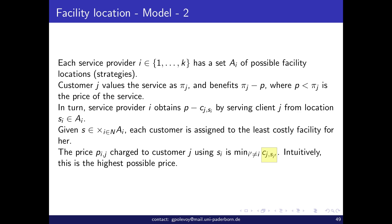The question is: how much would the least price from another service provider i' be? That least price is simply that provider's cost to serve j. The idea is similar to second-price auctions. I choose a location and charge the maximum price that is not strictly larger than someone else's price — that's the highest possible price. Service providers choose locations, then customers go to the least costly facility. The price is defined as above, and then we know exactly what each one obtains. That's the game.